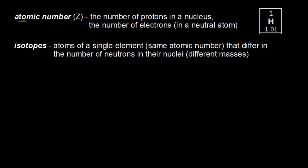The atomic number is symbolized by Z, and it refers to the number of protons in a nucleus. You can find the atomic number on the periodic table. In a neutral atom, the number of protons is equal to the number of electrons, because there's no overall charge — the positive charges of the protons completely balance with the negative charges of the electrons.